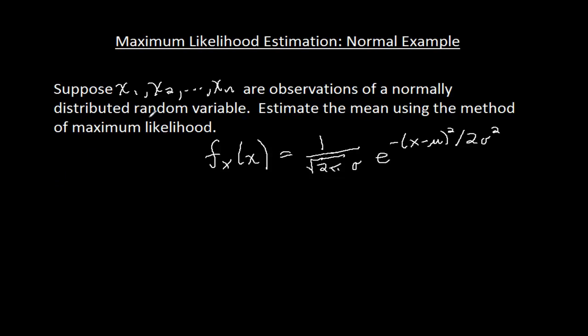In the method of maximum likelihood, if we're wanting to estimate mu, then we do so by maximizing. And that's why it's called maximum likelihood. And some sources even refer to this as the likelihood function for continuous random variables, the product of the PDFs evaluated at the observations, f sub x of xi.